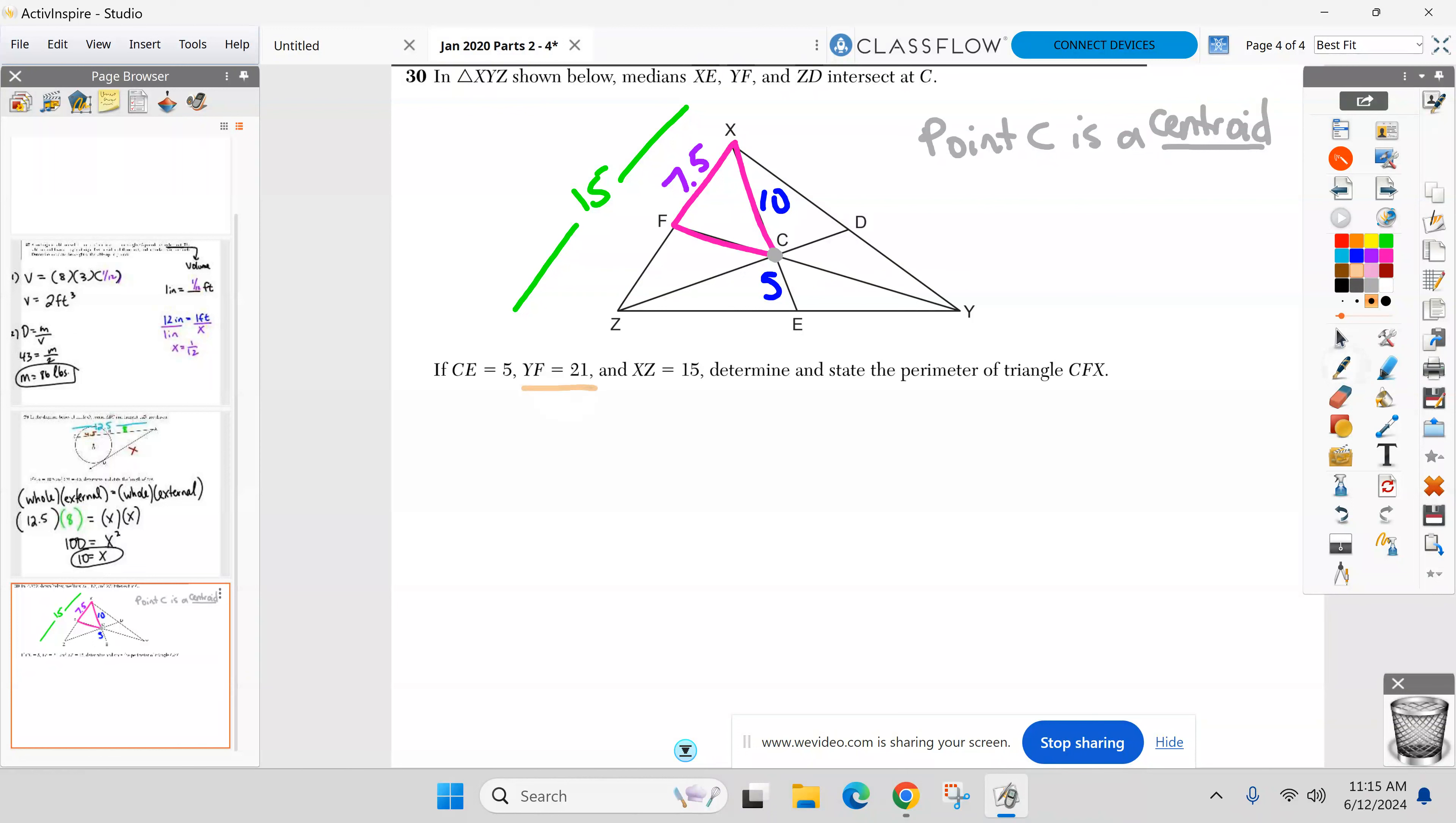And we're going to get to FC by knowing the whole median YF is 21. So we can do guess and check if you want. You can say, all right, what number double itself adds up to 21. All right. I need two numbers. One's double the other one that adds up to 21. So you can guess and check, or we can do this algebraically: call FC X, double it, CY is 2X, and they add up to 21. Or guess and check. So X equals 7. So FC is 7.